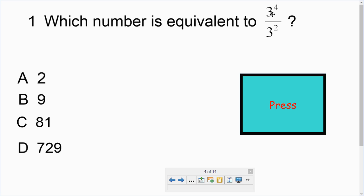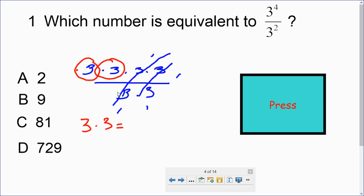Which number is equivalent to 3 to the fourth power divided by 3 to the second power? So we have 3 to the fourth power, and we can write that out in expanded form: 3 times 3 times 3 times 3, and put that over 3 to the second power, which is 3 times 3. We can cancel out this one and that one, cancel down this 3 and that 3. We'll be left with just 2 threes: 3 times 3. And that'll be equal to 3 to the second power, and that's another way of saying 9. So our answer would be B, 9.